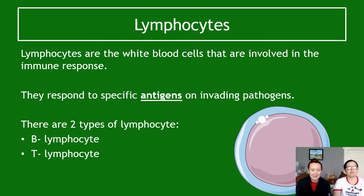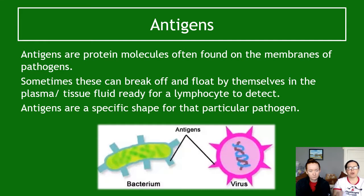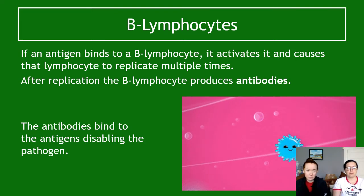Lymphocytes respond to specific antigens. There are two main types: B lymphocytes and T lymphocytes. Antigens are protein molecules found on the membranes of pathogens — they are specific-shaped protein molecules. Sometimes antigens break off and float in the plasma or tissue fluid, where lymphocytes lurking in the lymphatic system can detect them. Antigens are essentially like a lock on the outside of the cell, and each lock is unique to that particular cell type.